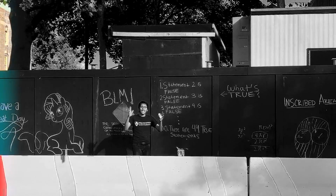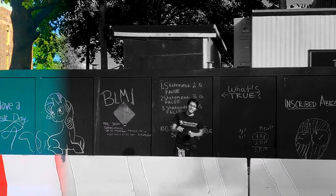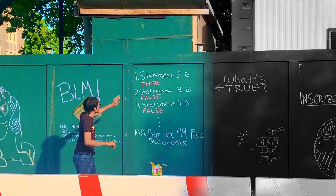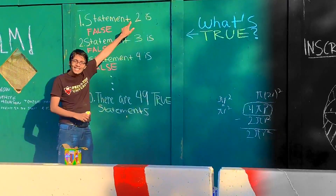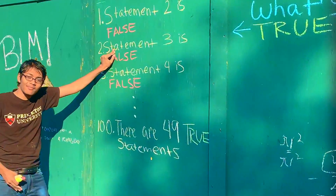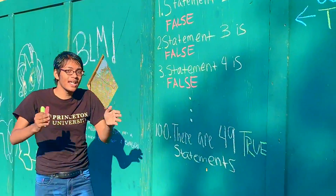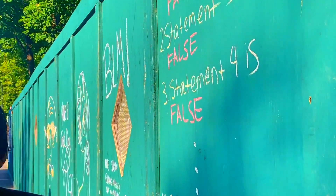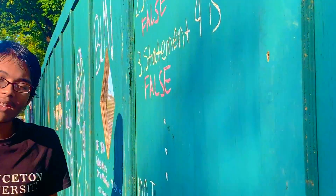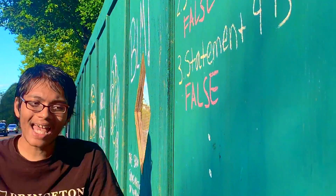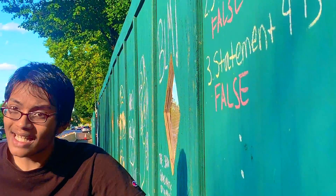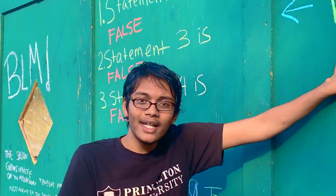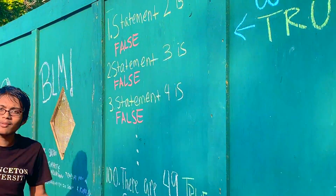Today we're looking at the next brilliant daily challenge. We have a list of about a hundred statements. The first statement says the second statement is false, the second says the third is false, the third says the fourth is false, and so on, until the hundredth statement which says there are exactly 49 true statements. The main question: which of these statements are actually true and which are false?